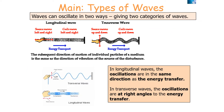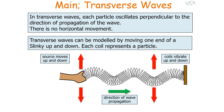In longitudinal waves, the oscillations are in the same direction as the energy transfer of the wave. In transverse waves, the oscillations are at right angles to the energy transfer. Each particle in a transverse wave oscillates perpendicular to the direction of propagation — there is no horizontal movement. Transverse waves can be modeled by moving one end of a slinky up and down, with each coil representing a particle.